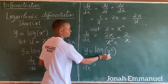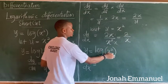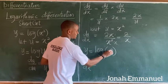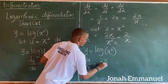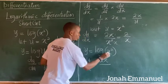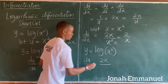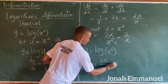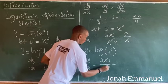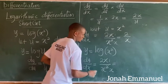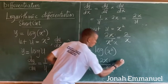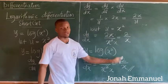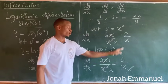The term in the brackets is x squared. Differentiating x squared gives 2x as the numerator. Repeat x squared as the denominator. This simplifies to 2x over x squared, giving 2 over x — the same answer, confirming the shortcut works.